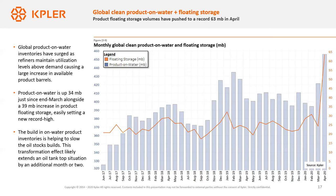A lot of these product volumes globally are struggling to find buyers. The orange line is floating product storage and the blue bars are product on water — both have increased by more than 30 million barrels month over month, indicative of this dual oversupply problem. An oversupply crude market means you're going to run some of those barrels because they're cheap, and that contributes to an oversupply product market in a market that doesn't have the demand. This problem is likely to persist for some time — probably through the summer we will see demand for clean products really struggle.